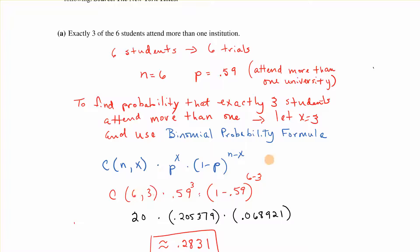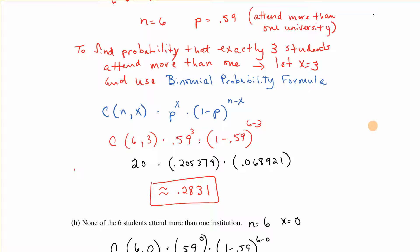Then it's just a calculation. So you can do the combination in your calculator times 0.59 to the third times this number to the third and you get approximately 0.2831. They will usually tell you what you want to round it to.